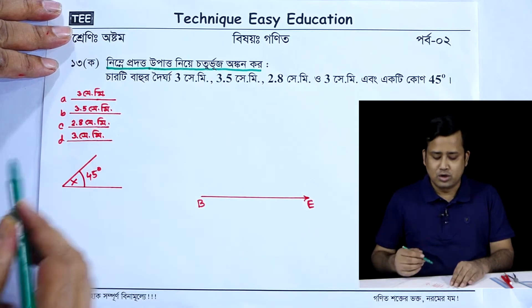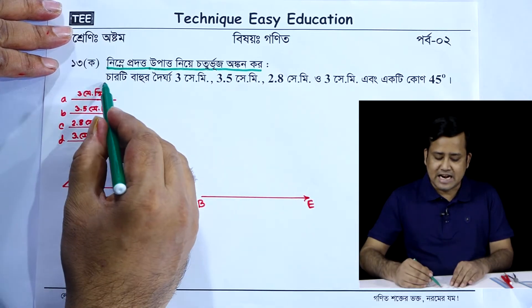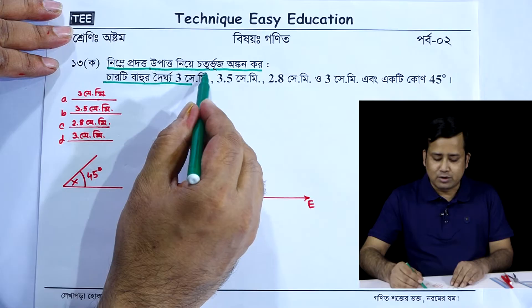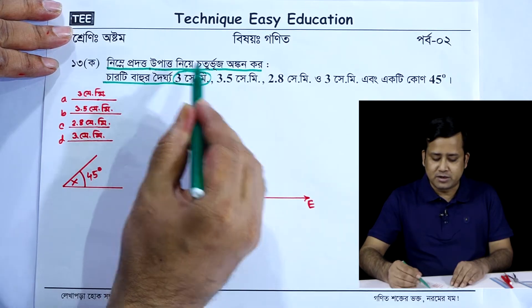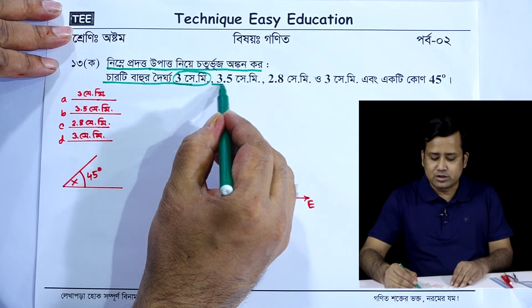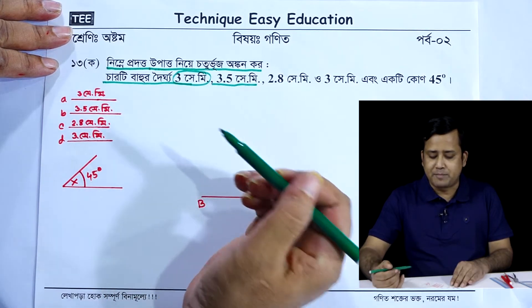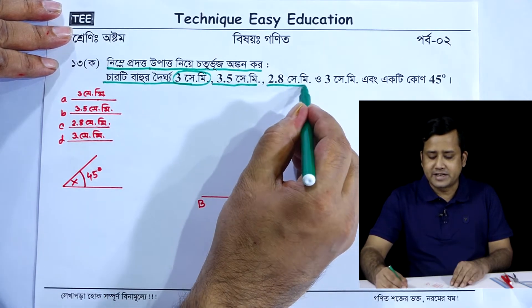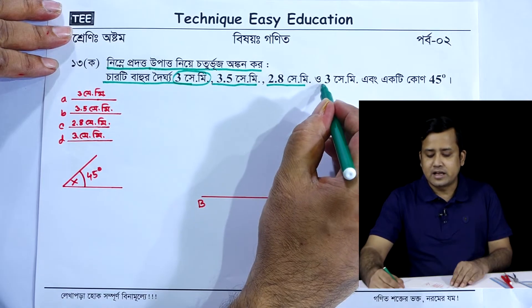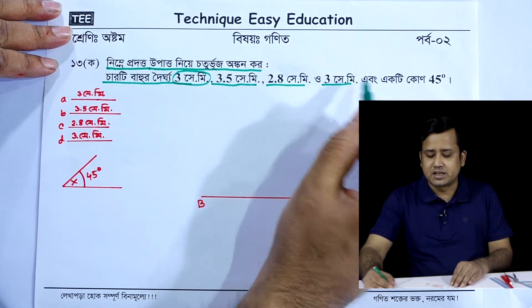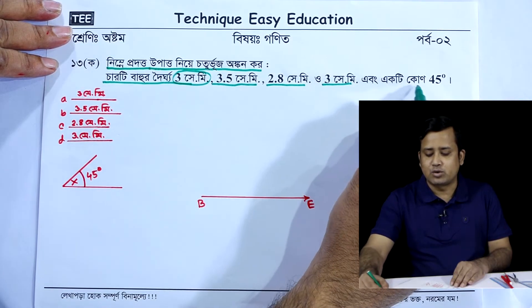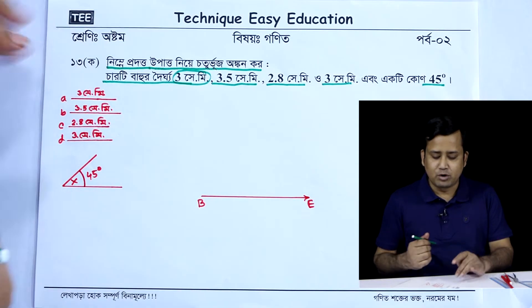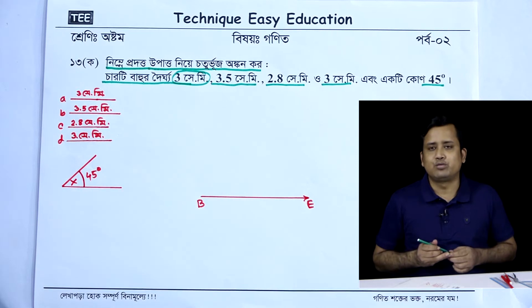Look, for a very small width: 3 cm, 3.5 cm, 2.8 cm, 3.5 cm. So, from 1 to 45 degrees, we will do 4 degrees.